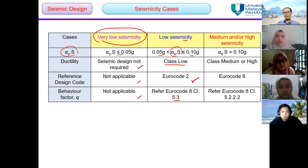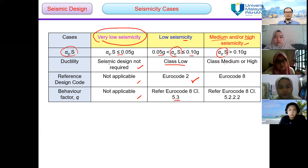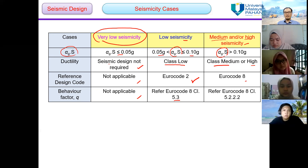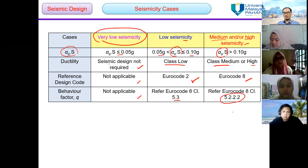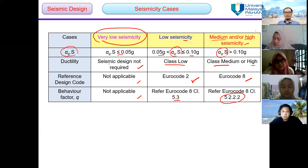However, if the product of alpha G times S is greater than 0.1g, it is under the category of medium or high seismicity. We propose ductility class high, refer to Eurocode 8 for detailing, and the behavior factor is from clause 5.2.2.2.2 of Eurocode 8. However, since Malaysia only considers ductility class low and medium, there is no high ductility class in Malaysia.